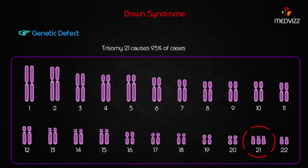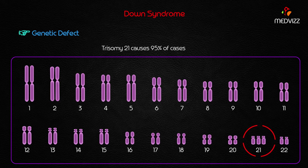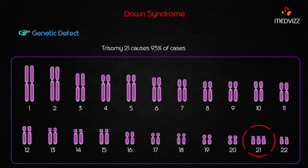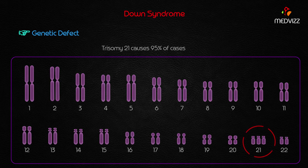This is the case of Down syndrome — trisomy 21. Trisomy 21 causes 95% of the cases of Down syndrome. The most common etiology is meiotic non-disjunction, which leads to the extra chromosome 21.